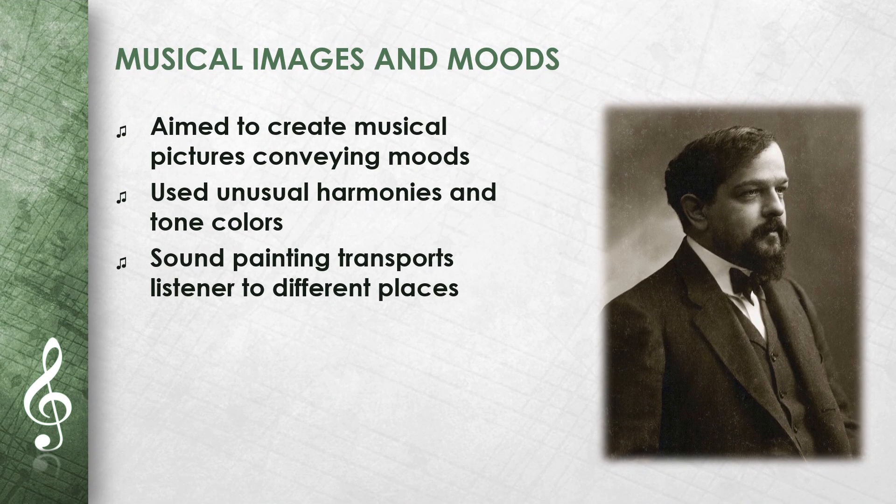In Images, Claude Debussy wanted to create musical pictures that convey certain moods and feelings. To do this, he used unusual harmonies and tone colors. For example, in Cloches à travers les feuilles, he imitates the ringing of bells. In Ibéria, you can hear Spanish dances and street music. Through this sound painting, the listener can be transported to different places and times.